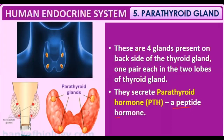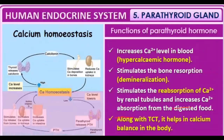You must remember that parathyroid hormone is a peptide hormone. It increases calcium levels in the blood, which is why it is called a hypercalcemic hormone. It helps in bone resorption — meaning it causes bones to dissolve or demineralize. It also stimulates reabsorption of calcium ions by the renal tubules and increases calcium absorption from digested food.